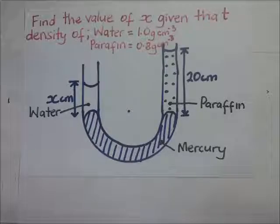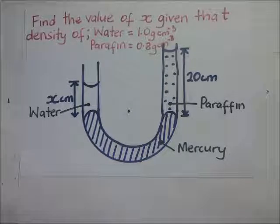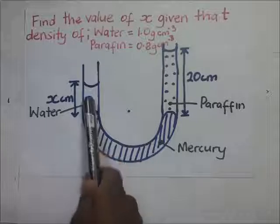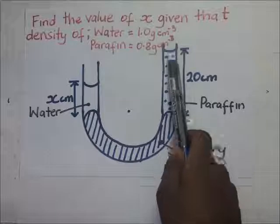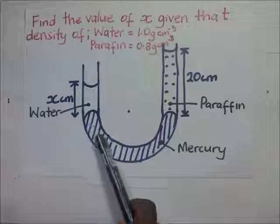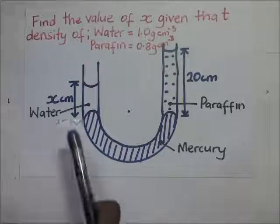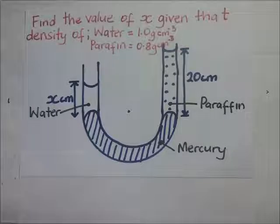Today we look at some worked examples on pressure in liquids. In front of us we have a liquid — water on one side, paraffin and mercury on the other. We are being required to find the value of x, which is the height of water in this limb.